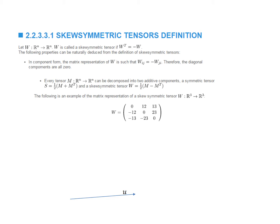Any matrix M, or tensor M, can be decomposed into two additive components. If I have a matrix M, I can add M to its transpose and divide by two to get a symmetric tensor S. M will be equal to the sum of S and W. Here's a picture of what these do: if I have a vector u, which is a general vector in the space, Mu is the vector resulting from applying M to u. We can decompose Mu into two vectors, Su and Wu.